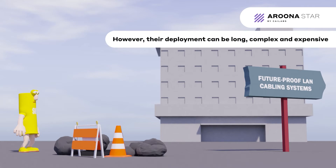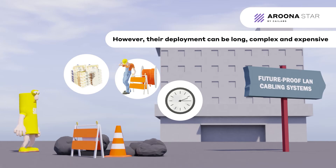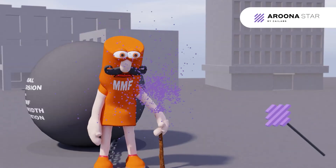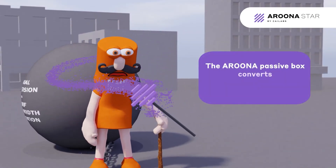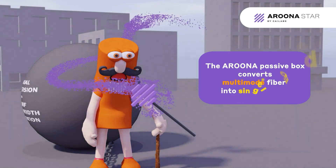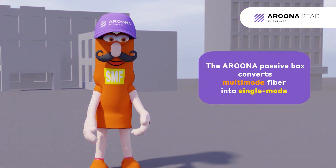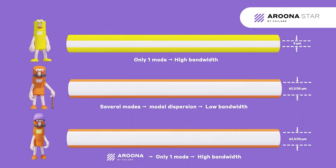However, deploying new fiber in an existing network requires a long, complex, intrusive, and expensive effort. The CHILAB ZARUNA solution converts a multimode fiber into a single-mode fiber, making it possible to future-proof the existing LAN infrastructure.